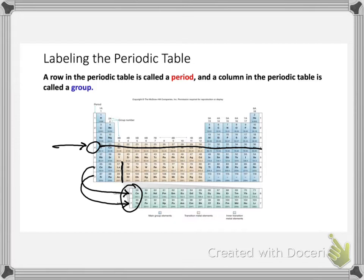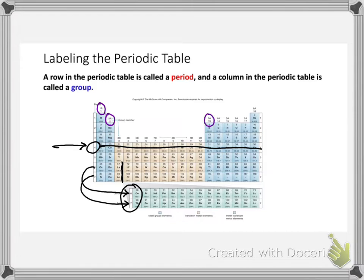So the rows are called periods. Then we have the columns — the columns are like towers, they go up and down. Any column like this would be a column, and all of those are called groups. The columns are called groups, and these groups have numbers and letters on the top so we can identify what they are.